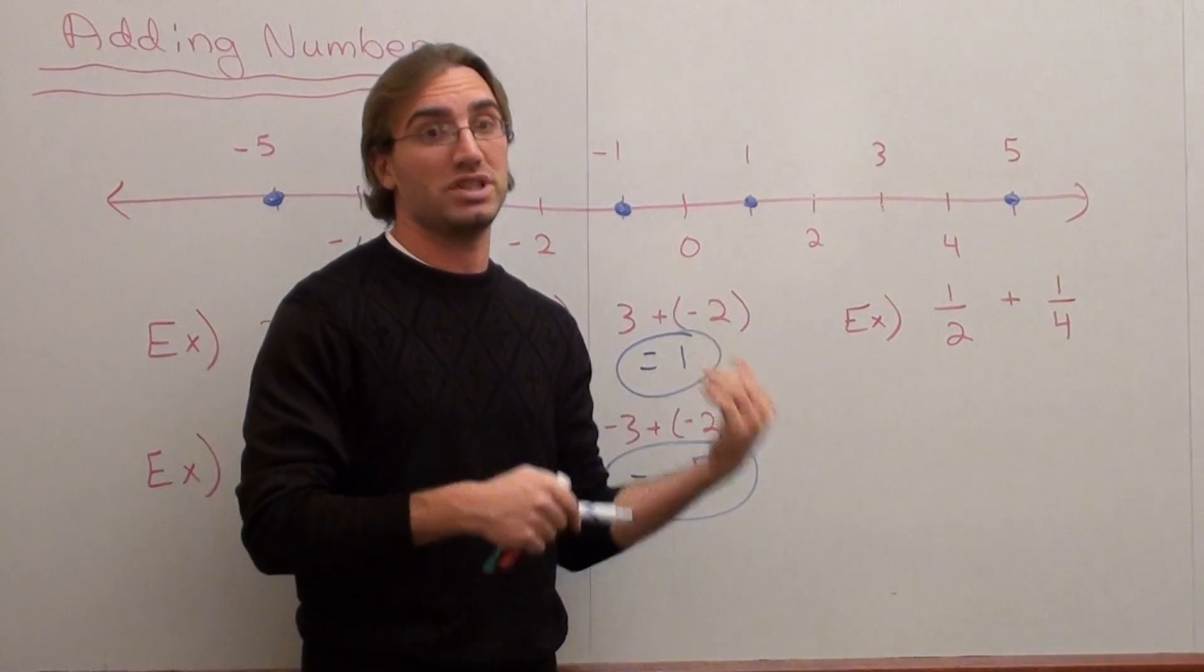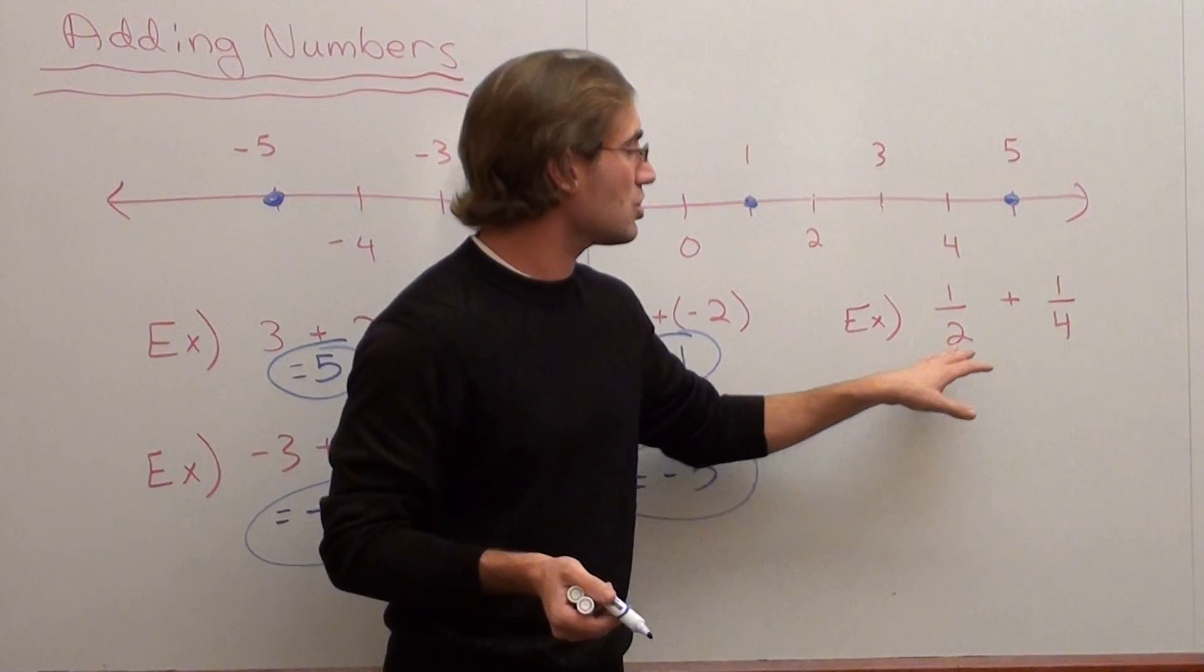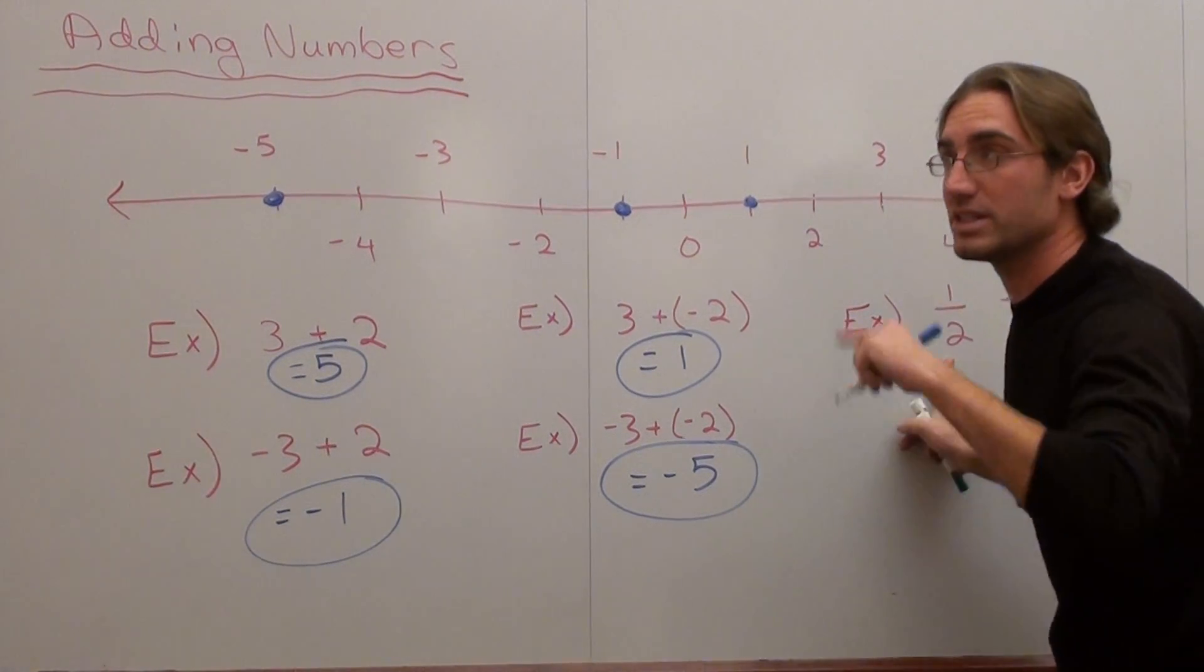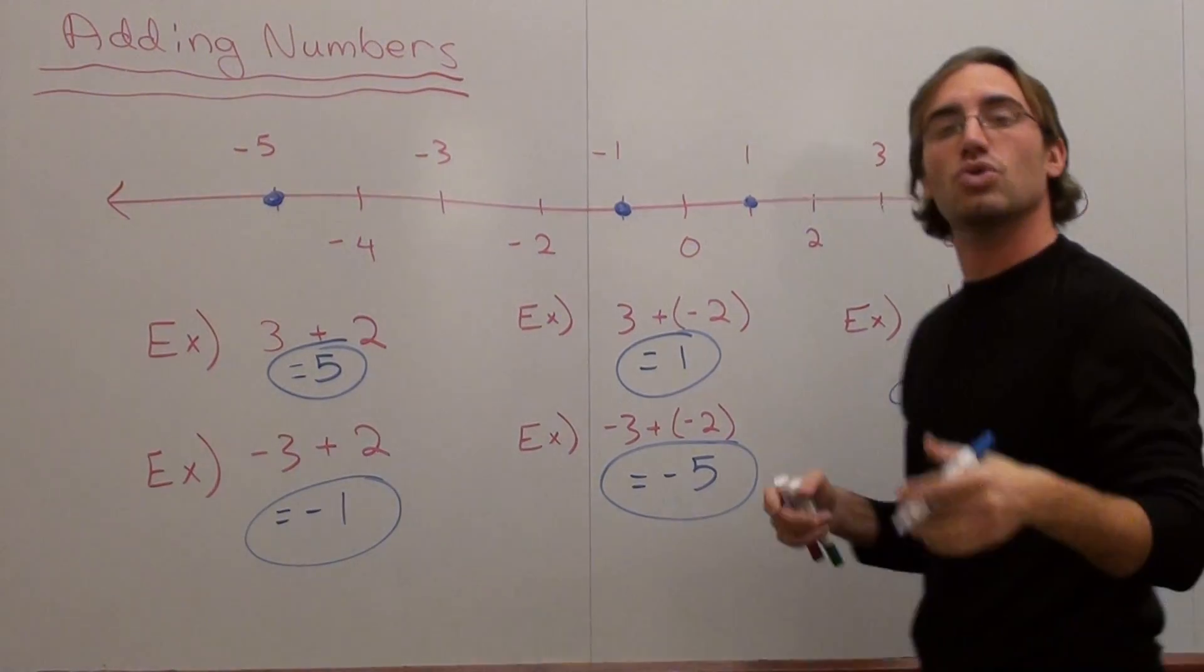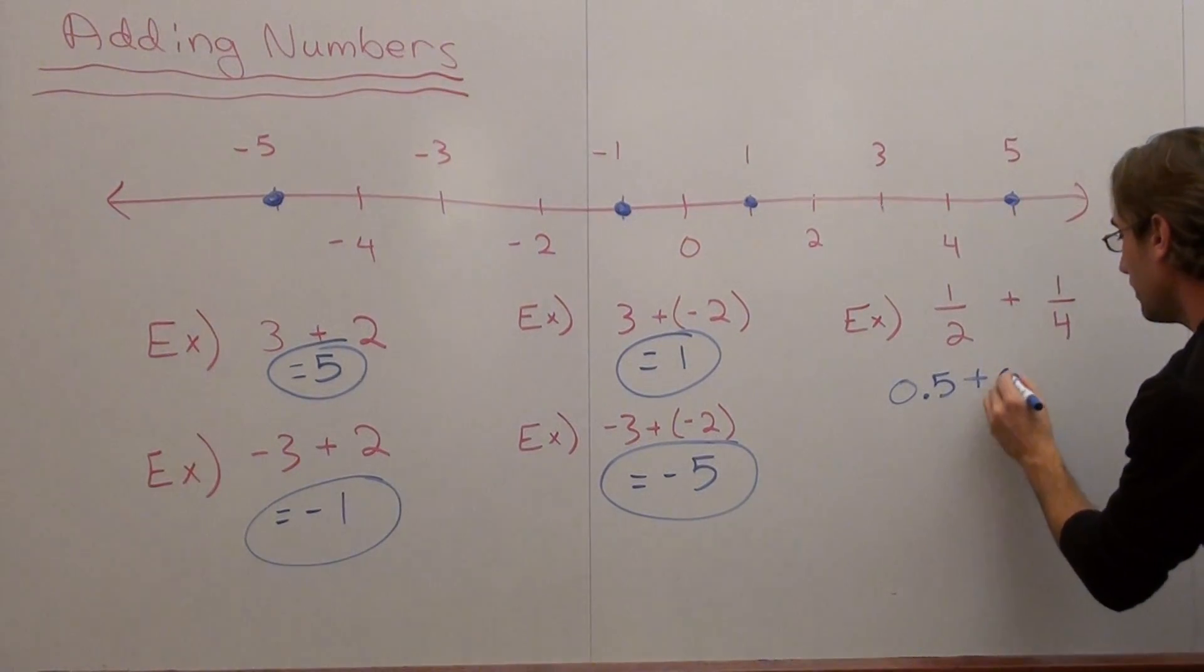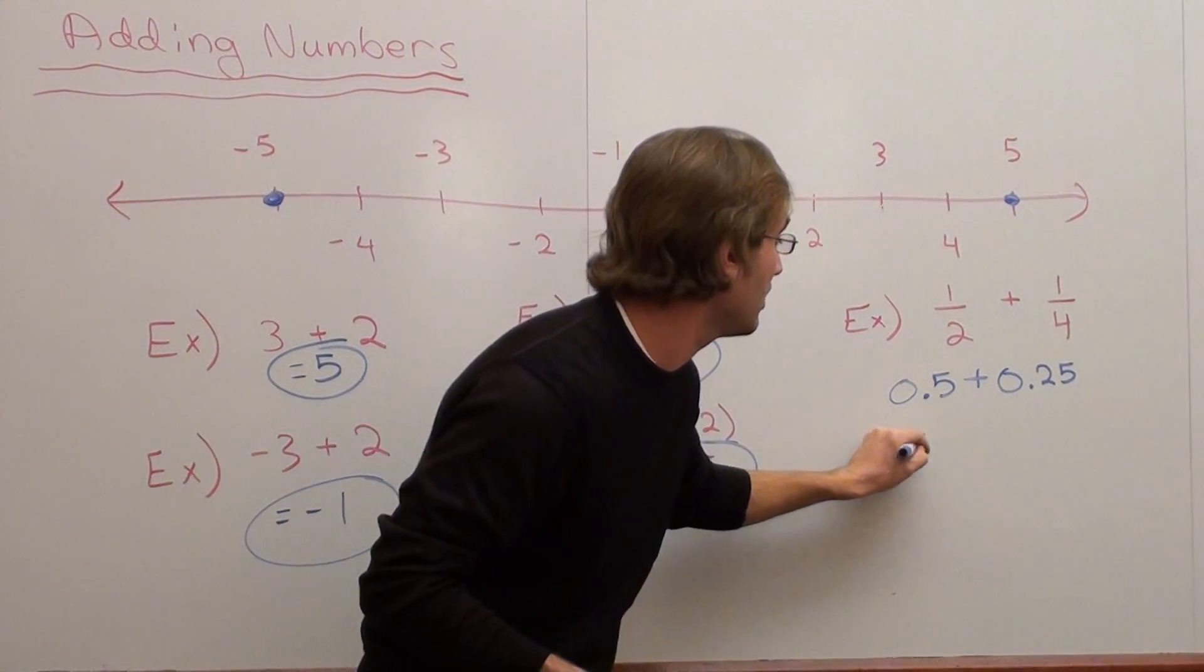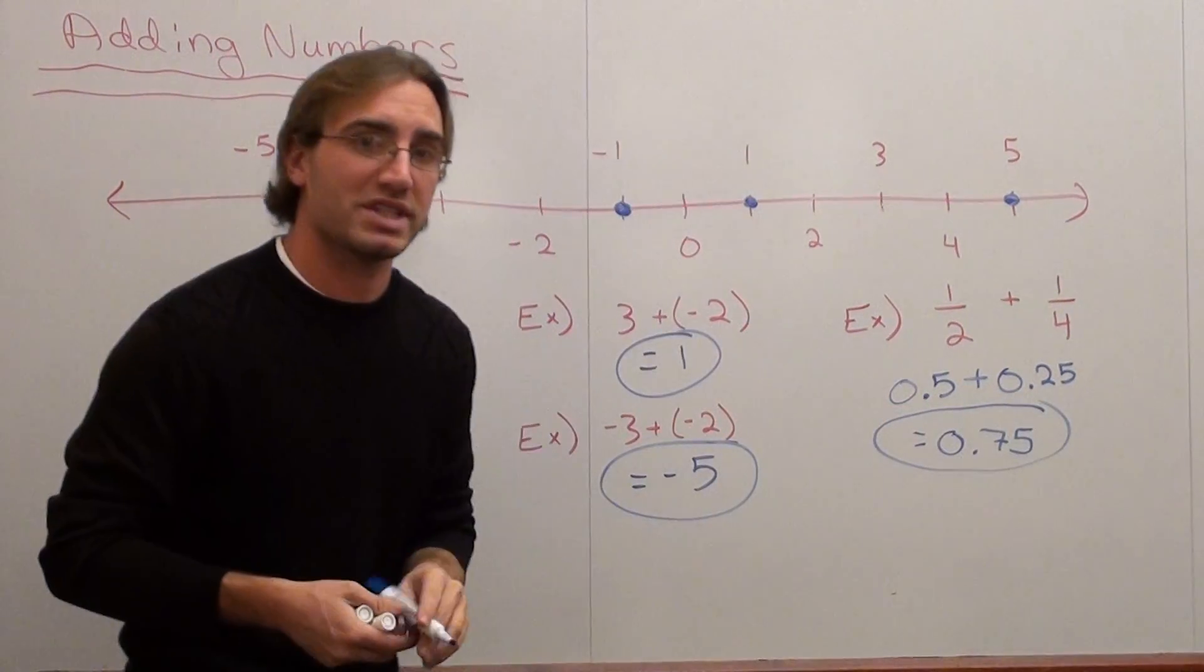You could also make the denominators the same, which is the second approach I'm going to do. So 1 divided by 2 is the same thing as 0.5 plus 1 divided by 4 is the same thing as 0.25. I went ahead and did the division in my head. So 0.5 plus 0.25 is 0.75.